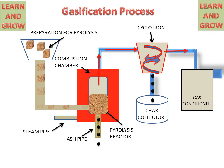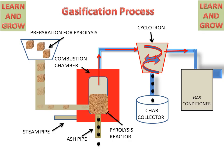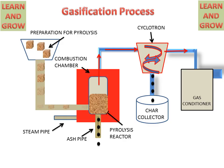The gas then goes to the gas conditioner where tar particles and other particles are extracted, and a clean syngas is produced. This syngas is further used for electricity generation or other purposes.